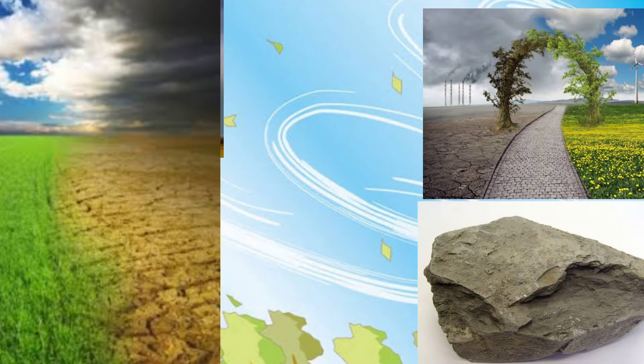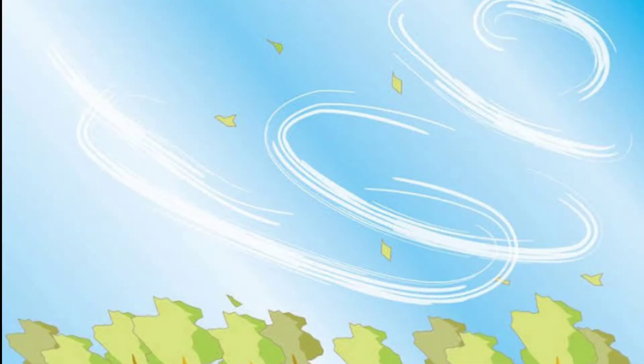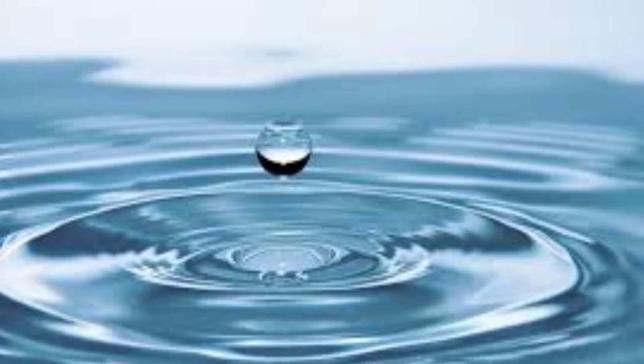They need air, water, food and shelter to survive. Examples of living things: human beings, insects, birds and plants, animals, etc.